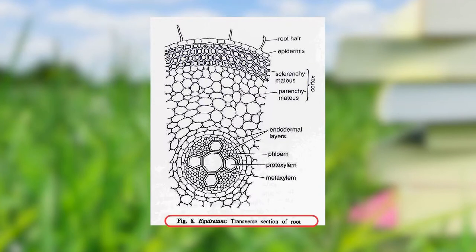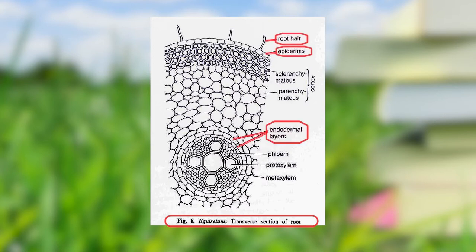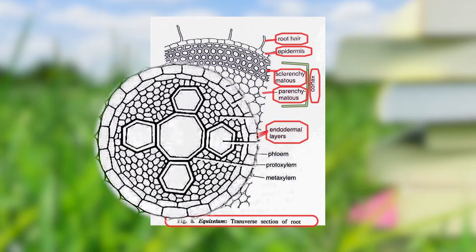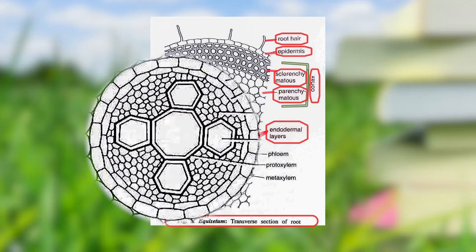Here we can see a transverse section of the root. The root of Equisetum has certain peculiarities. The main one is it has two layers of endodermis. You can see a single layer of epidermis, then an elaborate cortex divided into a chlorenchymatous portion and a parenchymatous portion, with the parenchymatous portion delimited by the endodermal layers. The outer endodermal layer is larger compared to the inner layer, which is smaller and has no Casparian strip.